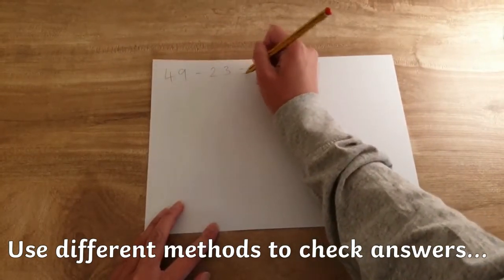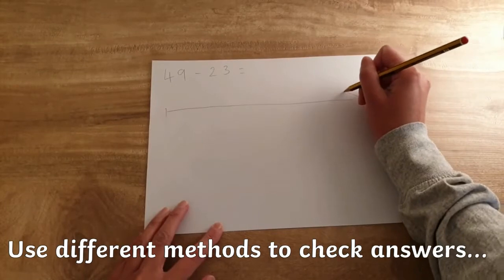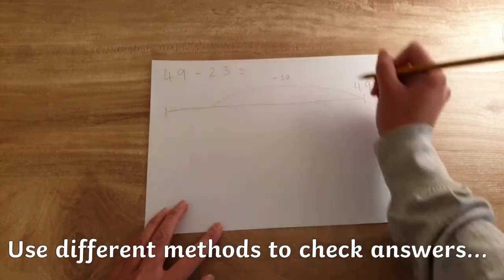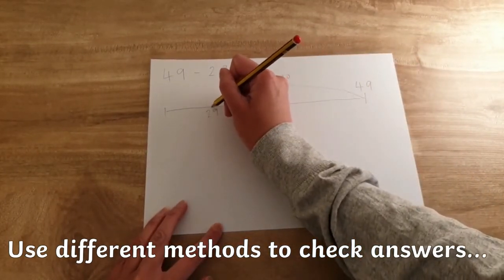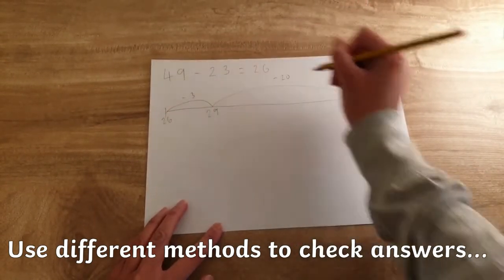Once your children have completed this task, why not extend their learning further? You can encourage children to use alternative methods to check their answer is correct, such as drawing and using a number line. This is a great reasoning task for children to check their answers and practice different methods to find an answer.